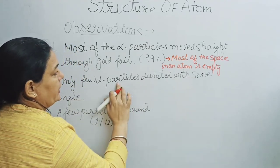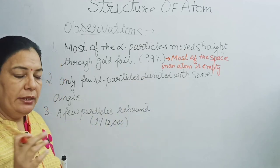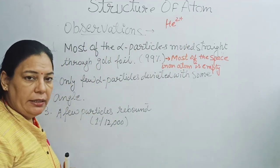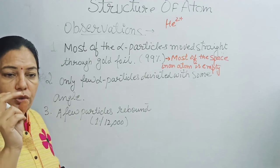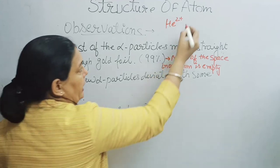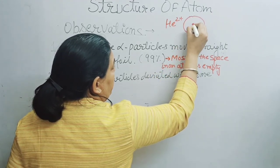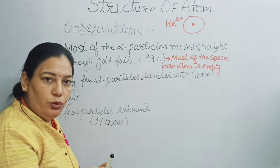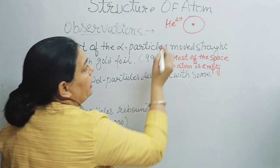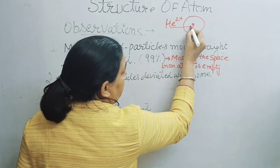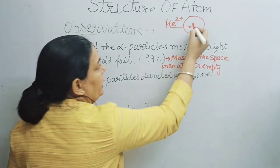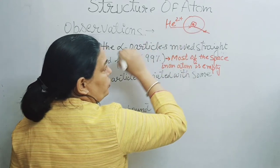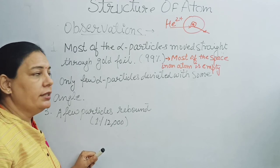Second conclusion: only a few alpha particles were deviated. The alpha particle carries He²⁺ positive charge. Rutherford explained that the atom has a small, positively charged area at its center. When the positive alpha particles come near this positive center, like charges repel, causing deviation. This central positively charged region is called the nucleus — and this is how Rutherford discovered the nucleus.